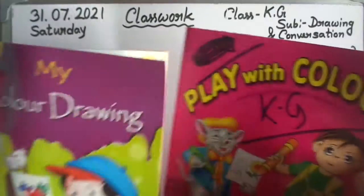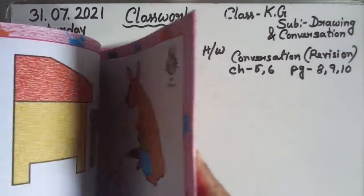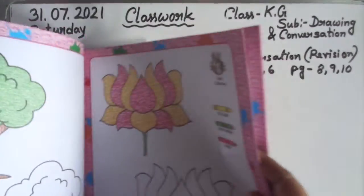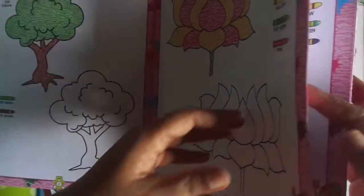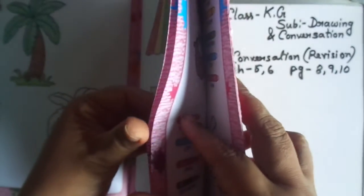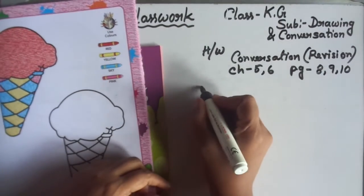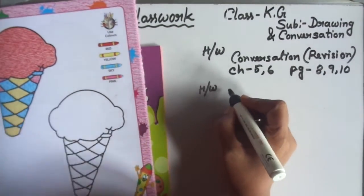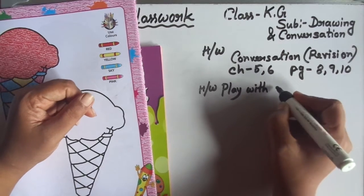Next, my color drawing and play with colors. Take out Play with Colors. Page 2 to 11. Your homework - Play with Colors - it is revision. Complete all pages.